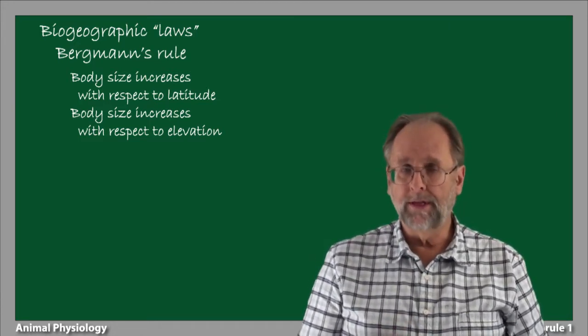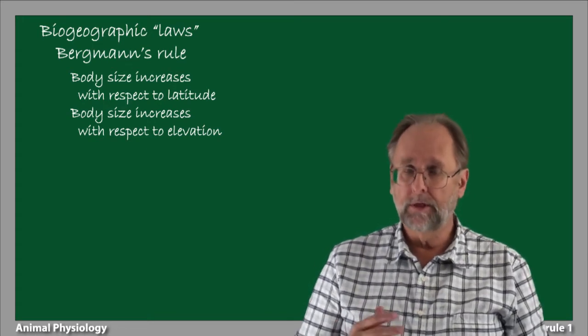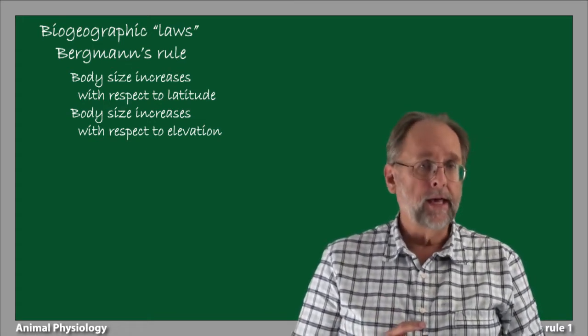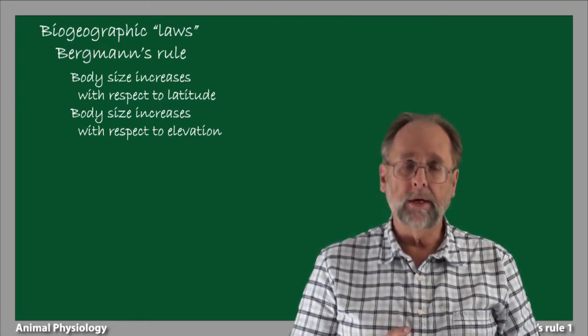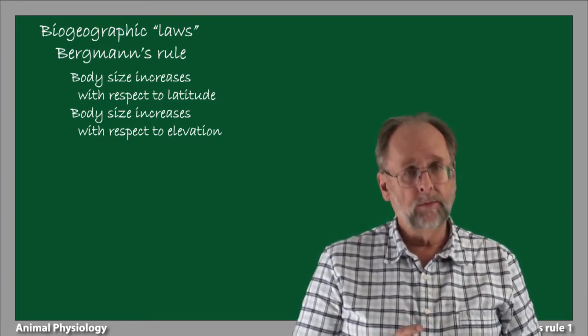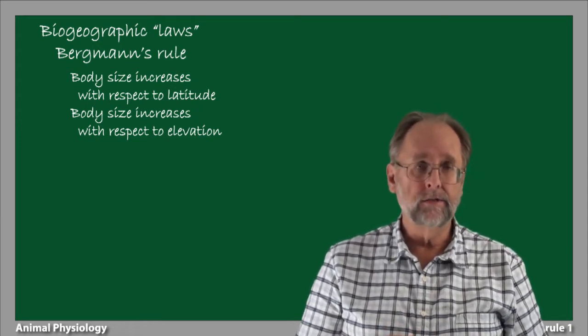Also, Bergman's Rule proposes that body size increases with respect to elevation. Animals that are found at low elevations supposedly will be relatively small in body size, whereas animals that live at higher elevations will be larger.